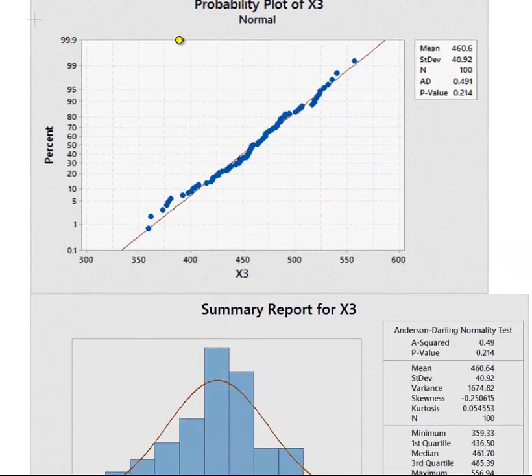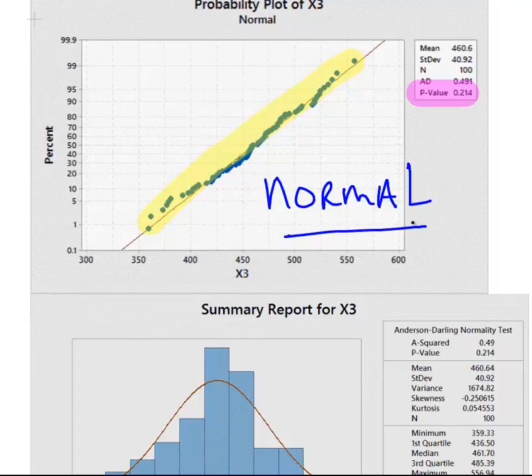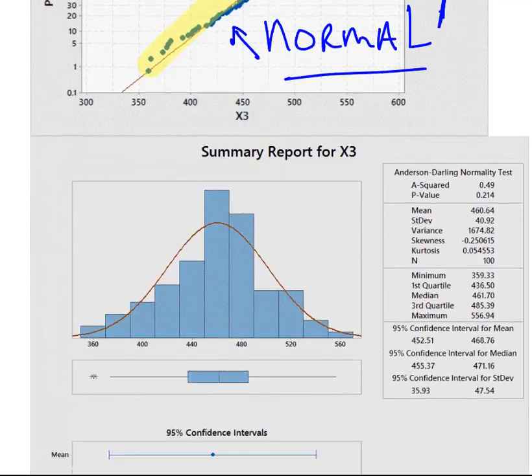Let's move on here. X3. I'm going to go through this very quickly. Normal. Dots follow the line. The p-value is large. That means not significant. Failed to reject the null hypothesis. So in both cases, so far, normal.